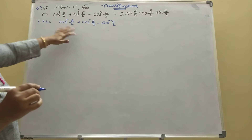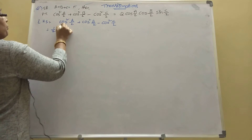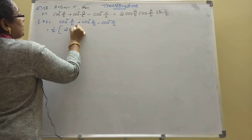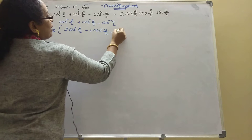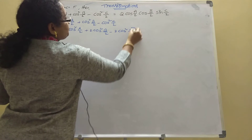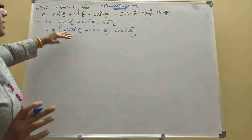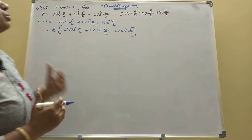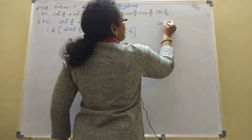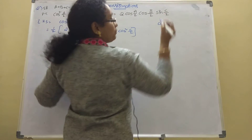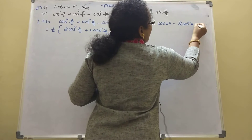Here 2 is not there, so we multiply and divide by 2: 1 by 2 times [2 cos square(A/2) plus 2 cos square(B/2) minus 2 cos square(C/2)]. Now the formula: cos 2A equals 2 cos square A minus 1, so in terms of half angle, cos A equals 2 cos square(A/2) minus 1. We want only 2 cos square(A/2), so 1 plus cos A equals 2 cos square(A/2).